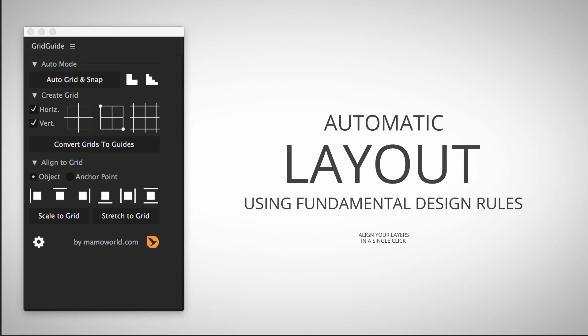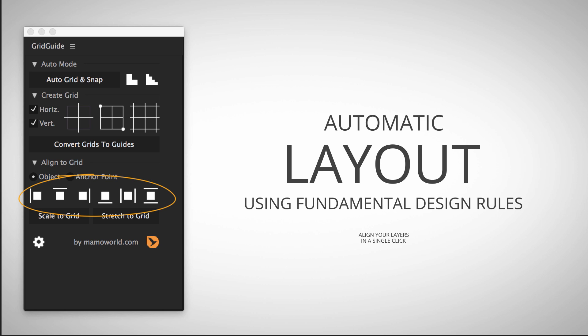Let's summarize how the auto layout feature of Grid Guide works. Just select all layers that should be laid out and click the Auto Grid and Snap button. Most of the time this is all you need to do, but you can also refine the result by making the grid finer or coarser. If something was not aligned the way you wanted, you can fix this using the alignment toolbar. Again, this is Eric D. Kirk for MamaWorld.com and I wish you the best in your use of Grid Guide.